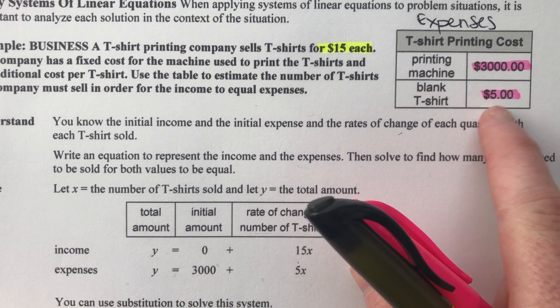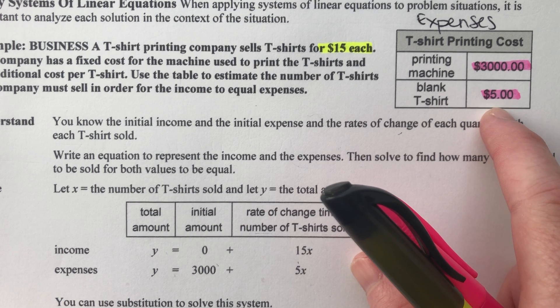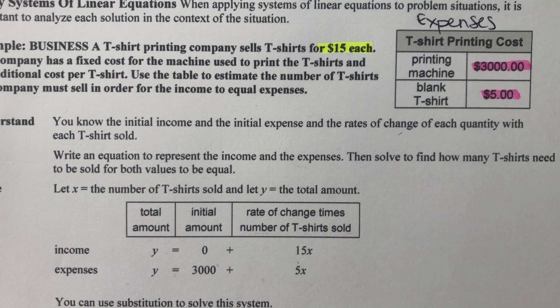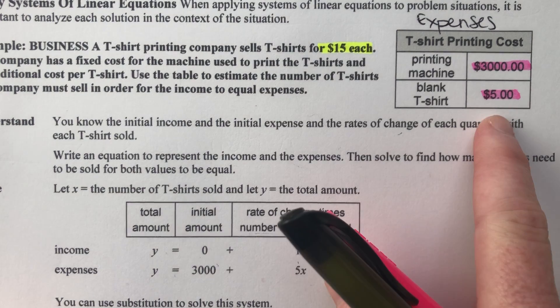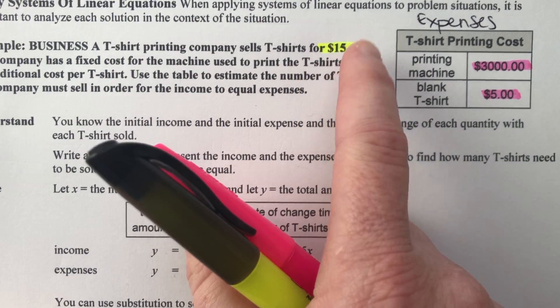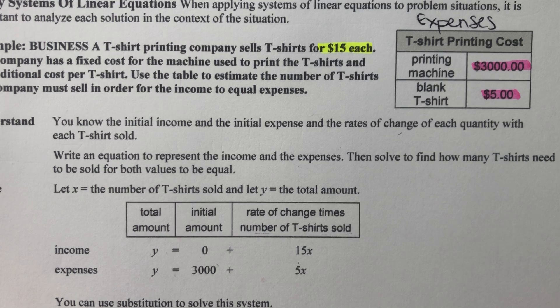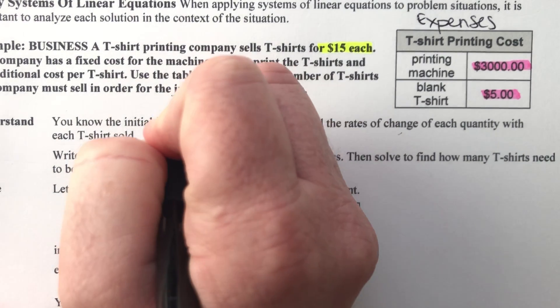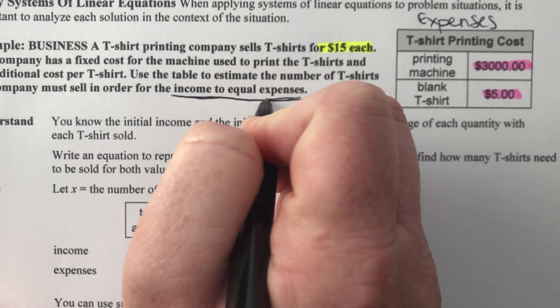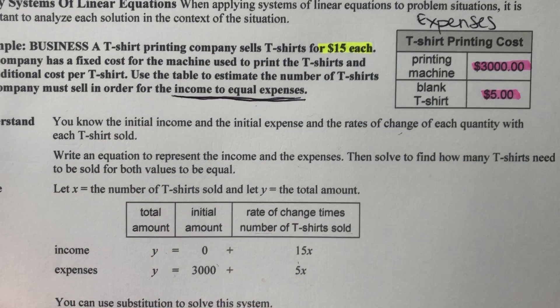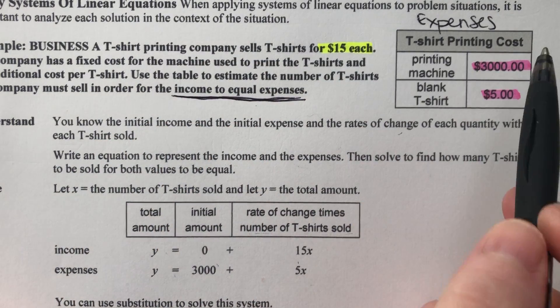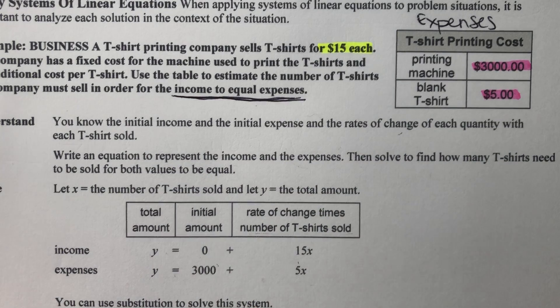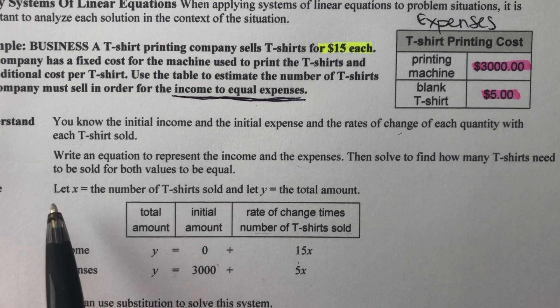It's costing us $5 to make each shirt. So $5 for one shirt. If I make two shirts, I have to spend $10 on the shirts. If I make three shirts, I have to spend $15. So expenses, this is income. We want to know when the two are equal to each other. When income equals expenses. This is what we're figuring out. So we need to write an equation for expenses, we need to write an equation for income, and we need to set them equal to each other to figure out when they're equal.